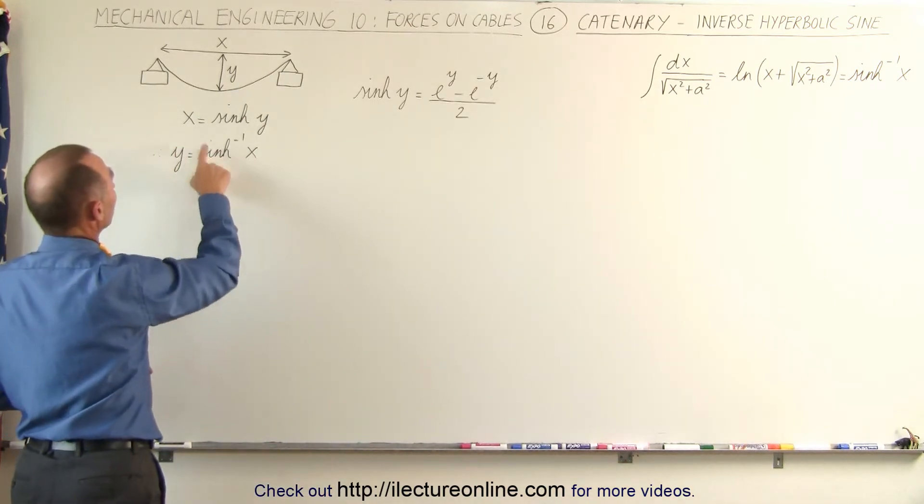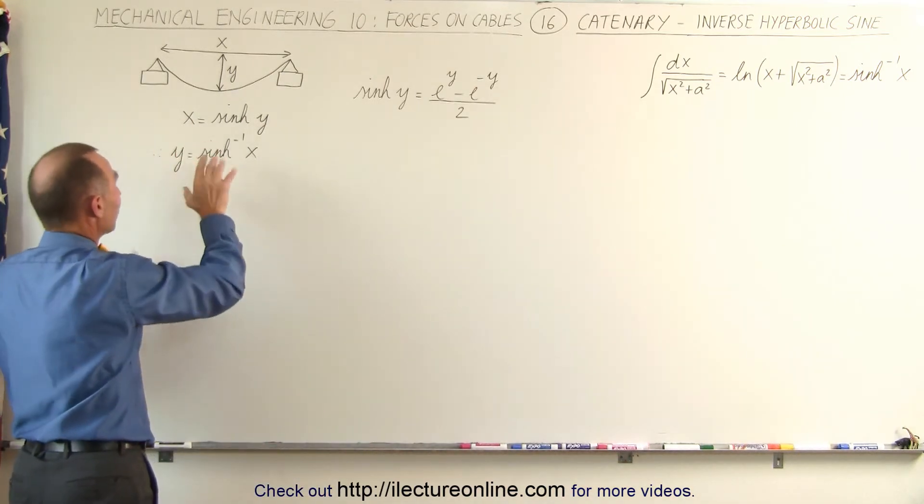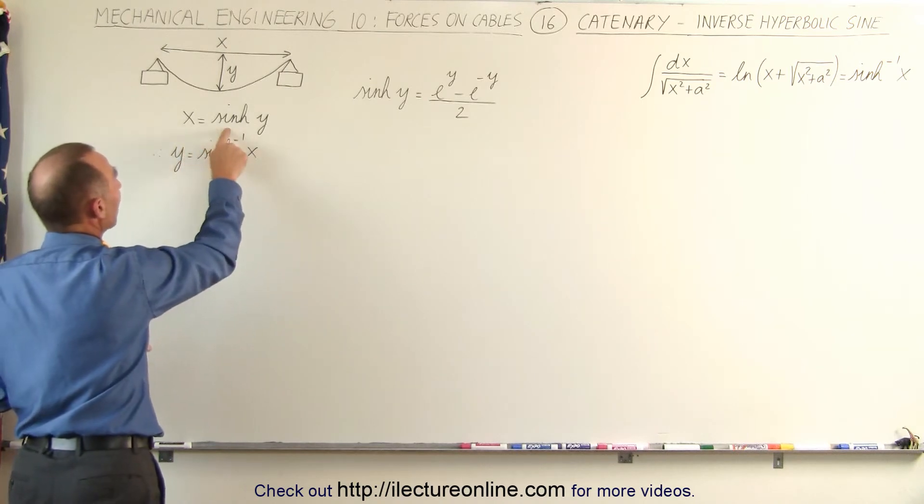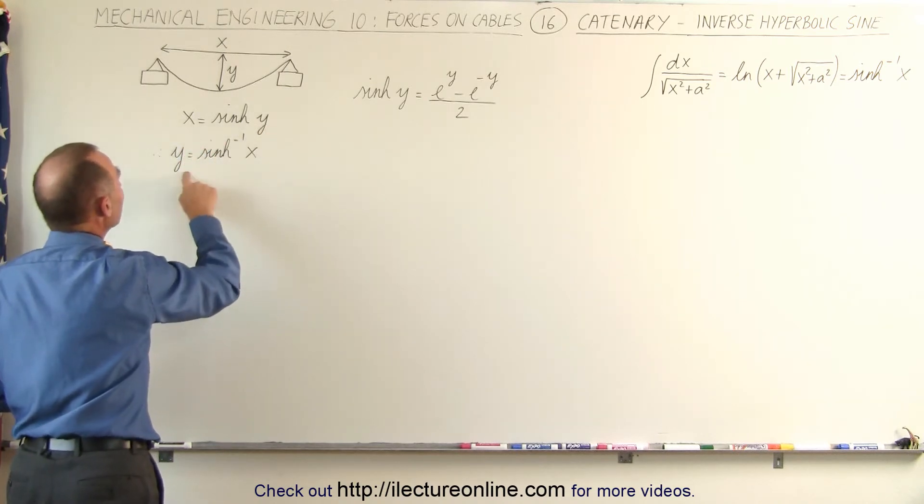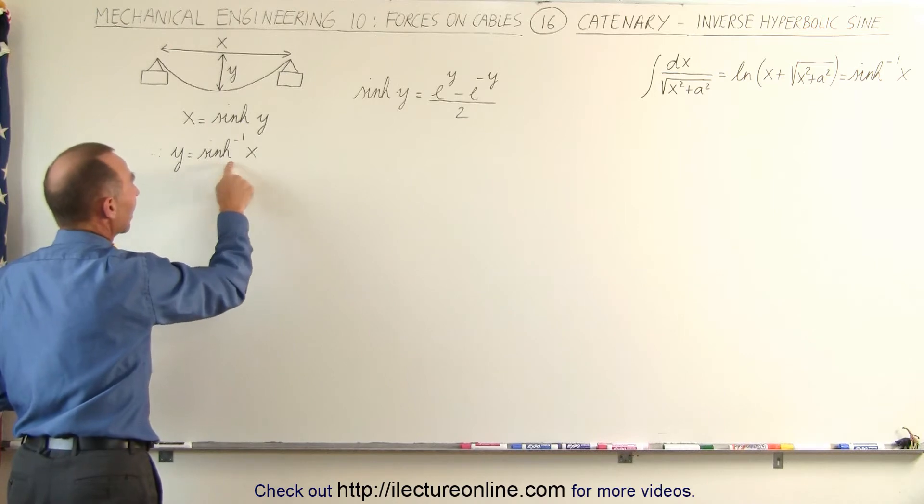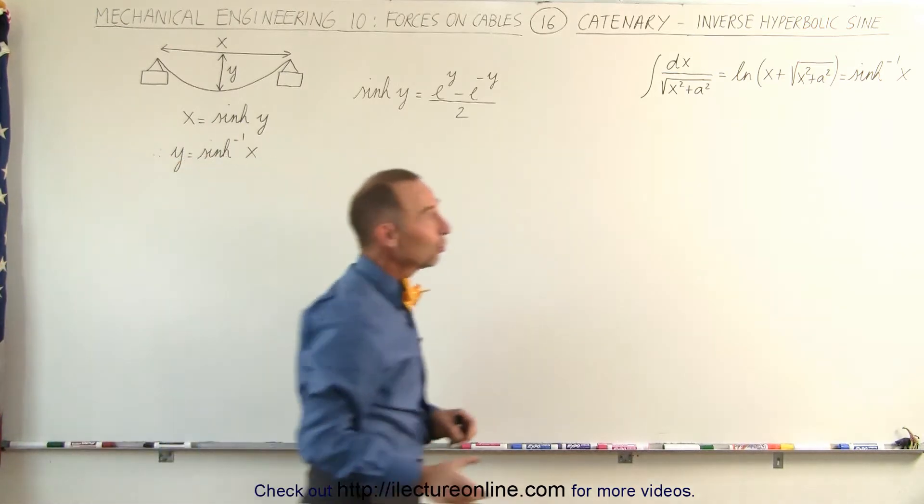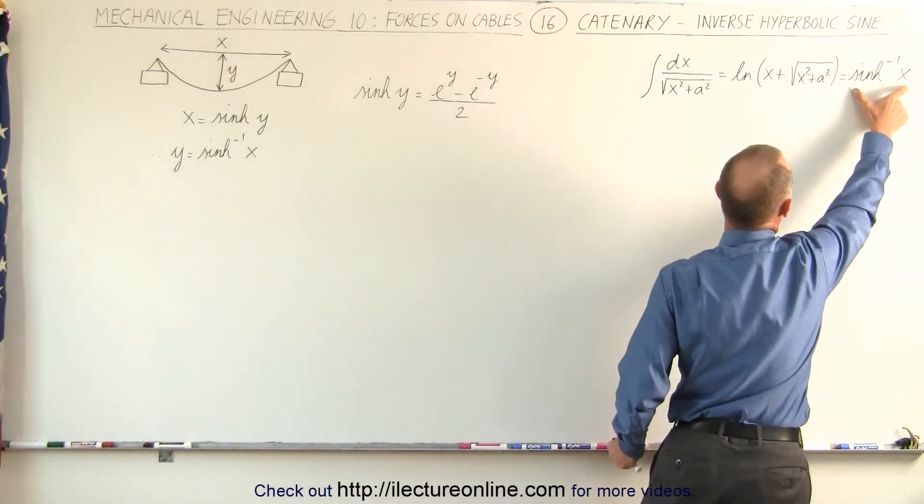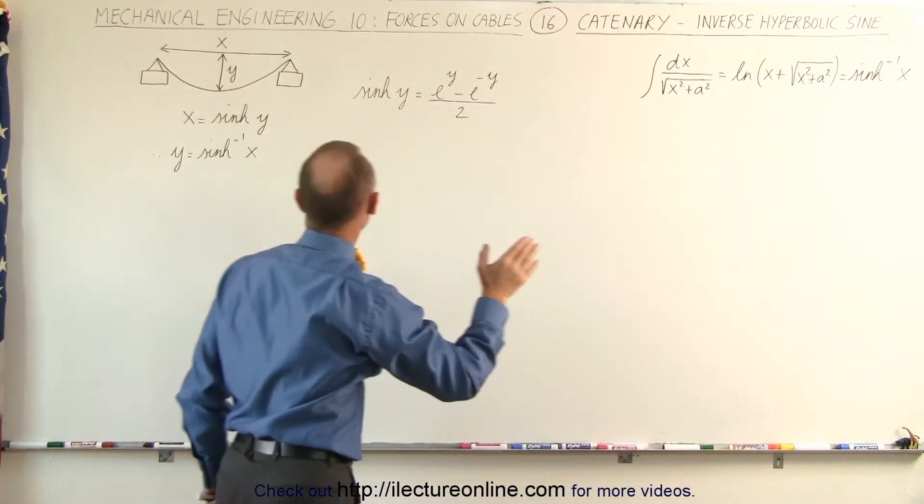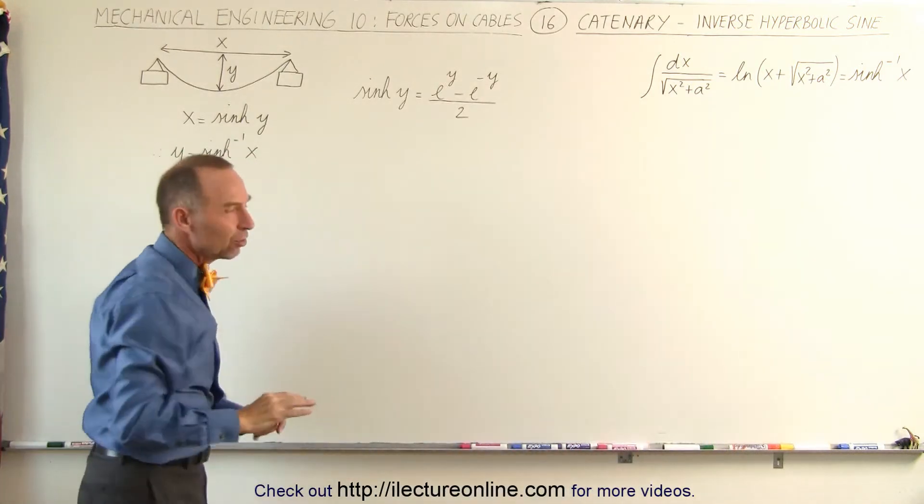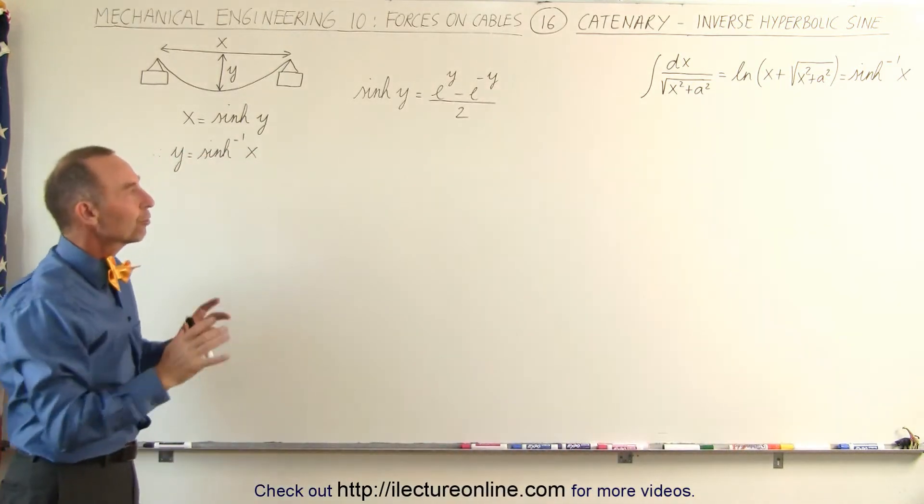And of course, we also need to know that if x is equal to the hyperbolic sine of y, then y equals the inverse hyperbolic sine of x. And of course, since we have that inverse hyperbolic sine of x over here, we can then set this equation equal to y.